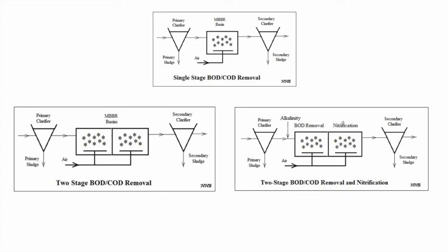Depending on the type and degree of removal of pollutants, we can have many MBBR stages. For a single stage BOD/COD removal, we have one aerated MBBR basin with a primary clarifier upstream. The MBBR basin is always followed by a secondary clarifier where activated sludge settles. Unlike the activated sludge process, this sludge is not pumped back to the MBBR basin — it is simply wasted.